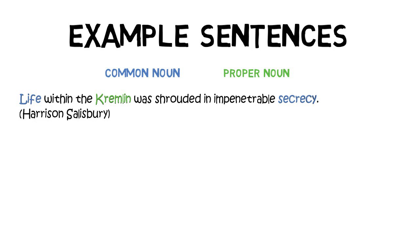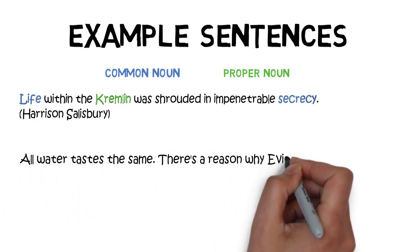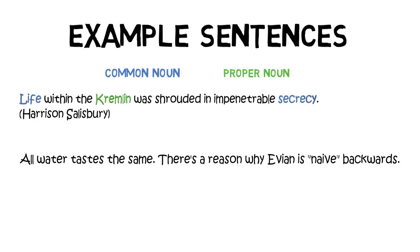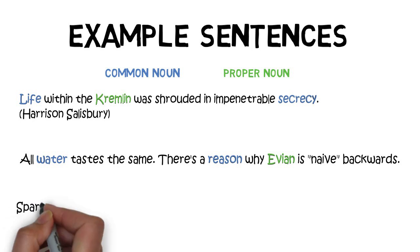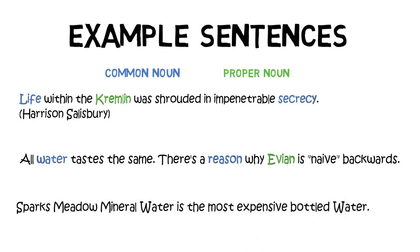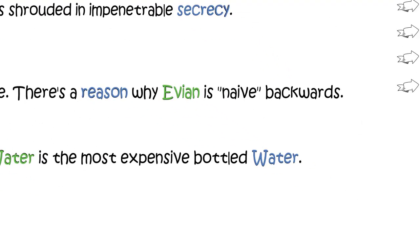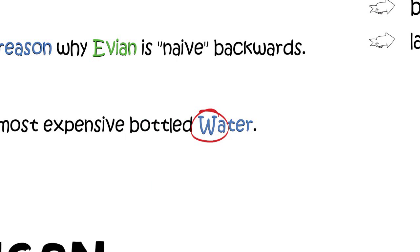That's a quote by Harrison Salisbury. Let's look at the next example: 'All water tastes the same. There's a reason why Evian is naive backwards.' In this sentence we have three nouns — two are common nouns with lowercase letters, and one, Evian, is a proper noun with an uppercase letter. Now, the third example: 'Sparks Meadow Mineral Water is the most expensive bottled water.' Here, 'Sparks Meadow Mineral Water' has capital letters, but the word 'water' at the end is a common noun. It seems to have a capital letter — well, that would be wrong. That should be a lowercase w for a common noun.